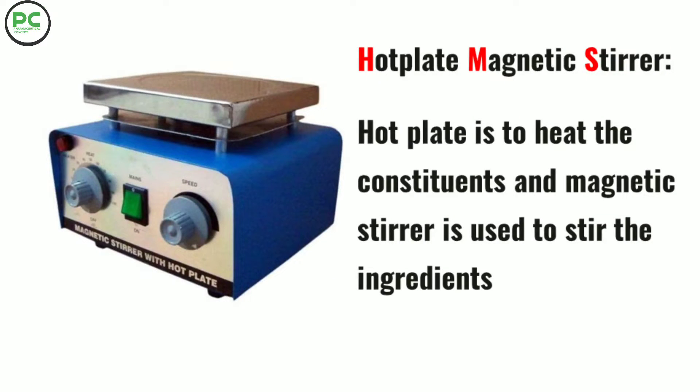Hot plate magnetic stirrer — the hot plate is used to heat the constituents and the magnetic stirrer is used to stir the ingredients.